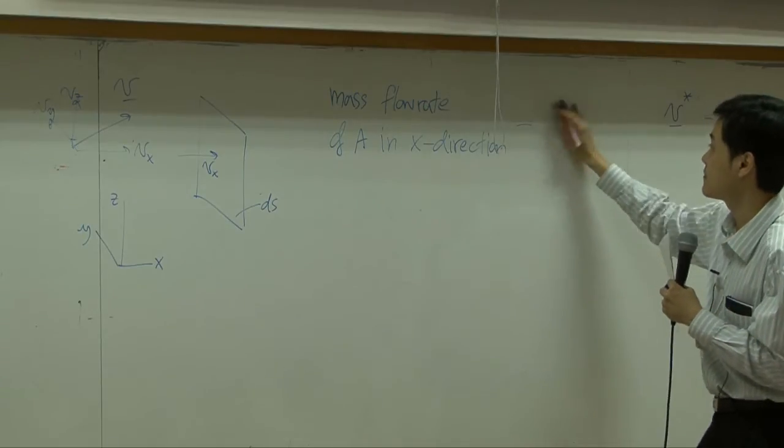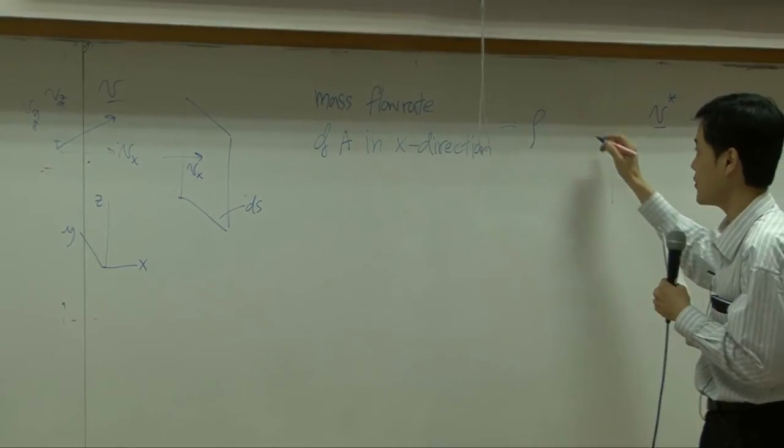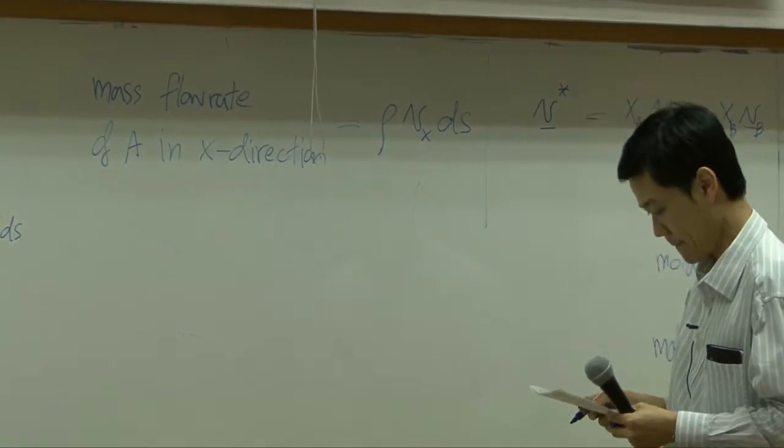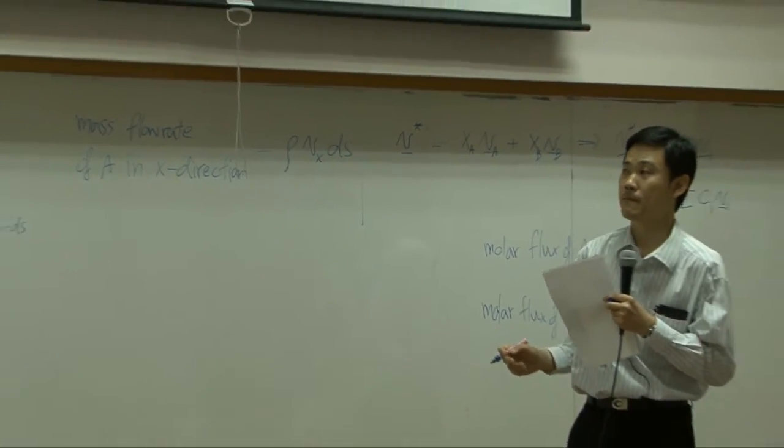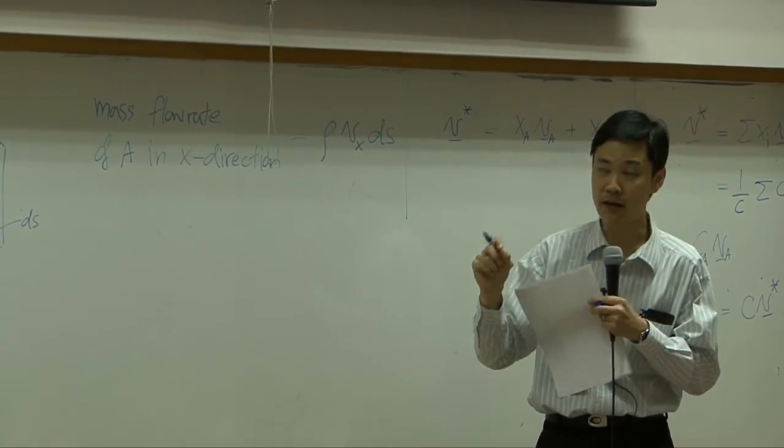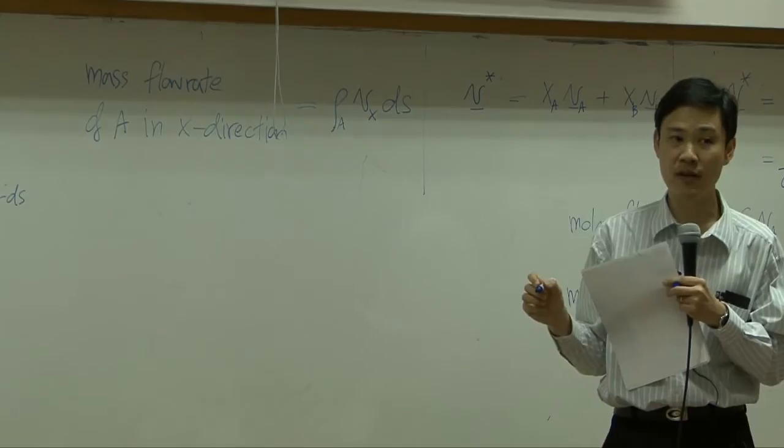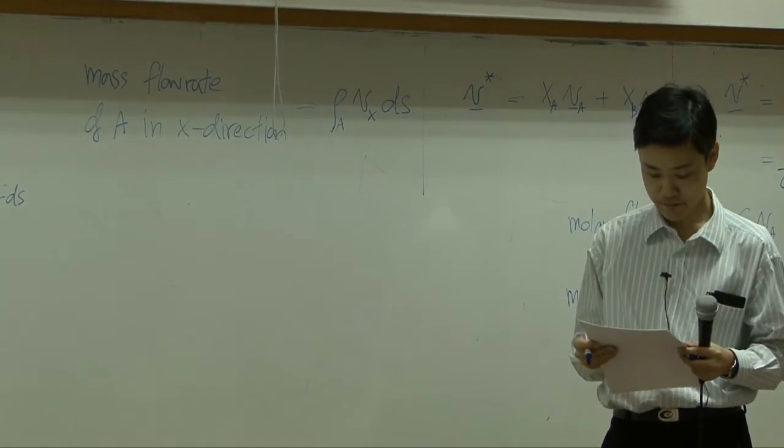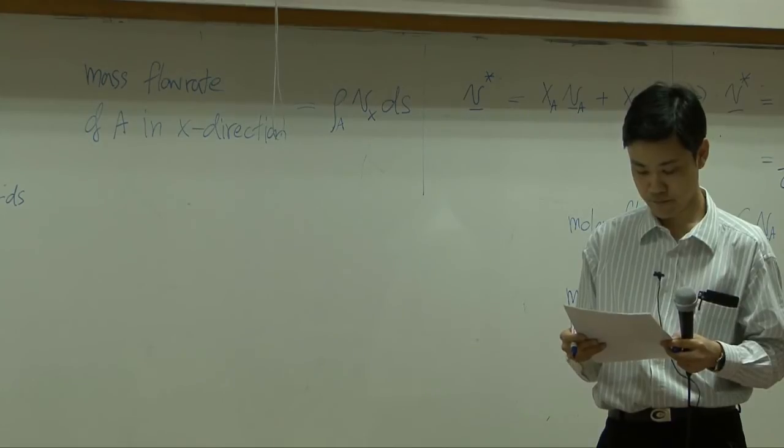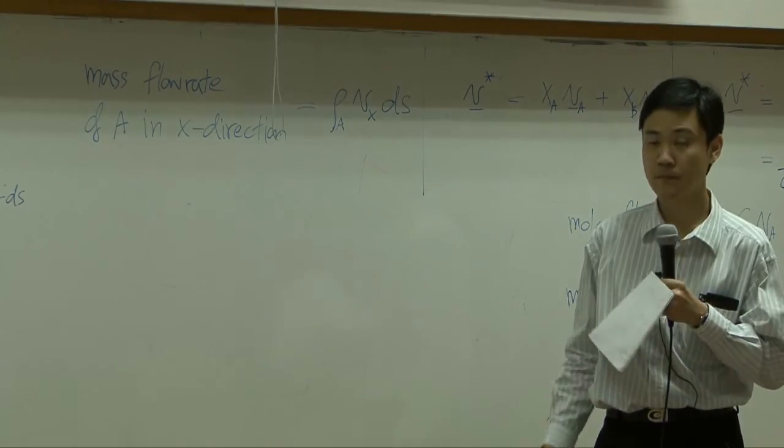Okay? So in this case, density multiplied by cross-section area, and multiplied by velocity. If you look for species A only, density here is supposed to be mass concentration of A.